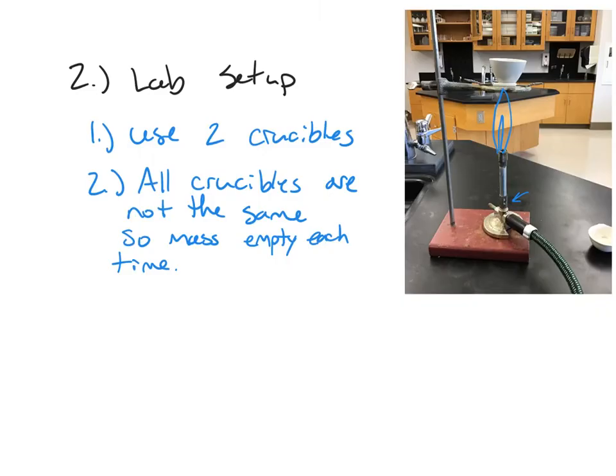So I zoomed out a little bit and wrote down a couple of tips. As I already mentioned you're going to use two crucibles. That's going to speed things up and allow you to do three trials before the time is up on the lab for the day. Second thing I want to point out is that if you use a crucible twice don't assume that the mass is going to be exactly the same each time. All crucibles are made slightly different and if you have the mass of one empty crucible don't assume it's the same mass as the other crucible.